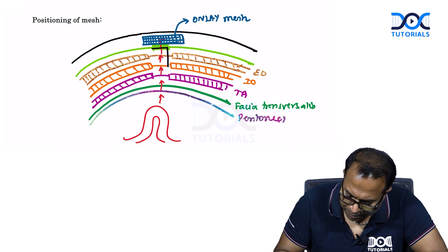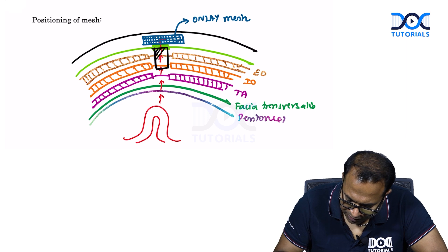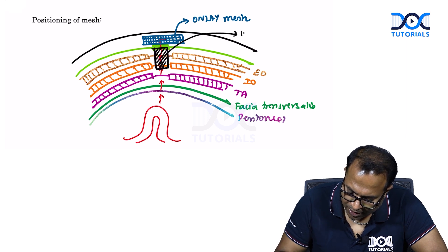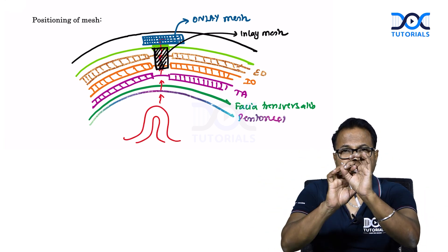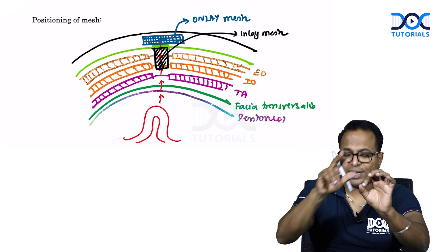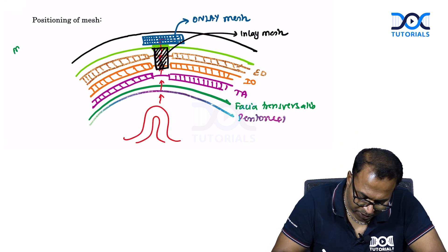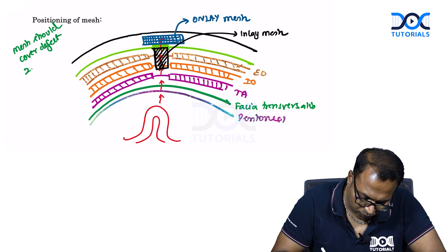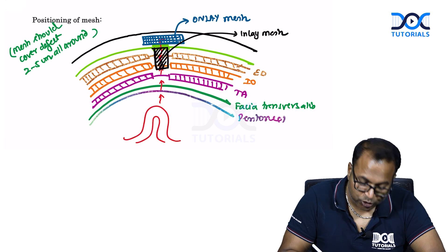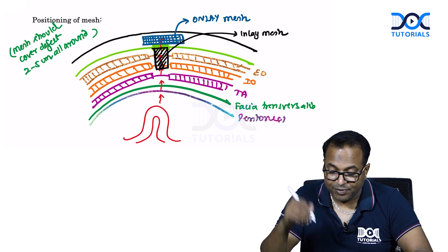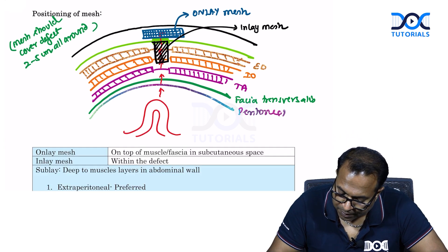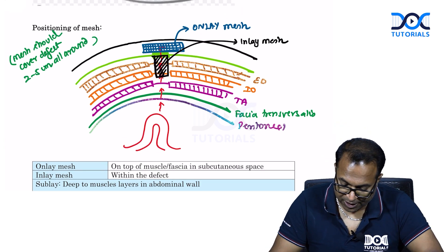Inlay mesh is placed into the defect itself and is no longer advised — it is abandoned because it does not adequately cover the defect and has higher recurrence rates. The current rule is that mesh must cover the defect by two to five centimeters all around. Because inlay mesh is kept within the defect without that coverage, it causes more chances of recurrence.